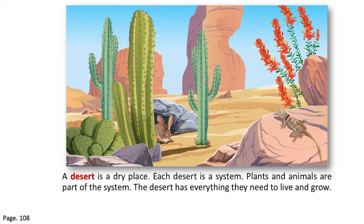A desert is a dry place. Each desert is a system, and plants and animals are part of this system. The desert has everything they need to live and grow.